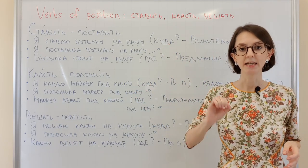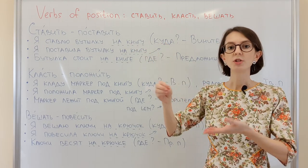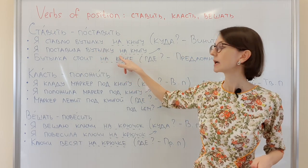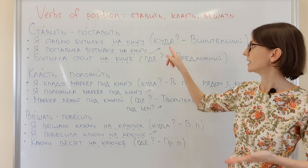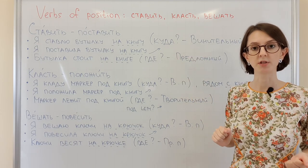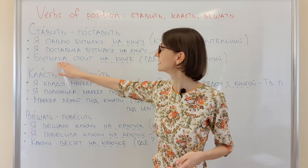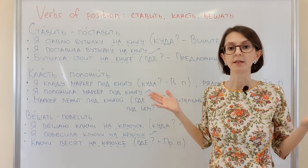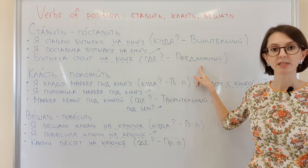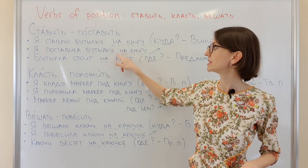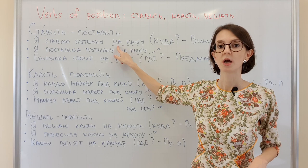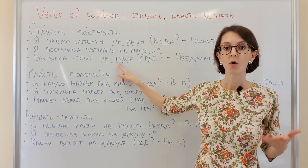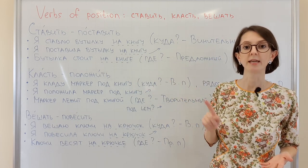We ask the question куда? — we are talking about destination. I'm putting the bottle to where? Куда? This is accusative case — винительный падеж. Я поставила бутылку на книгу — I put the bottle on the book. But when we talk about location: бутылка стоит на книге — we ask где? And we use prepositional case — предложный падеж. The same preposition на is used, but for direction we use accusative, and for location we use prepositional case.